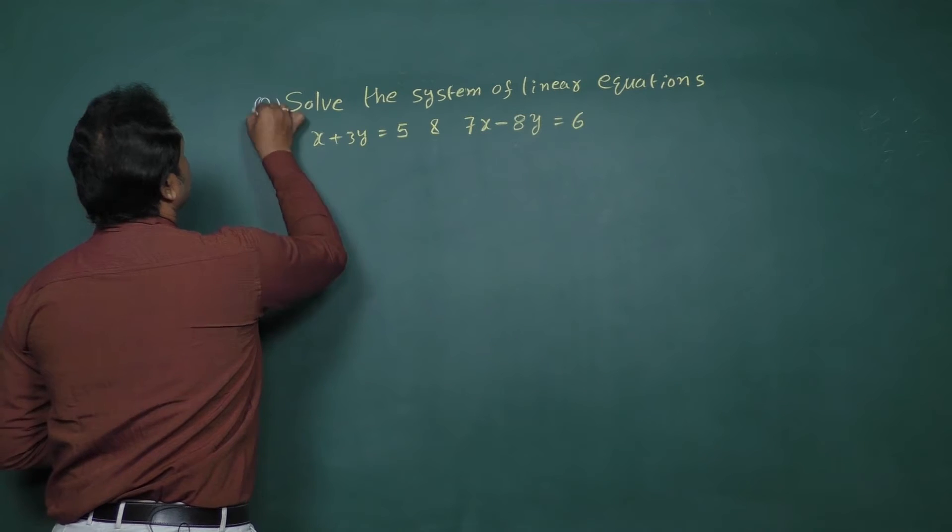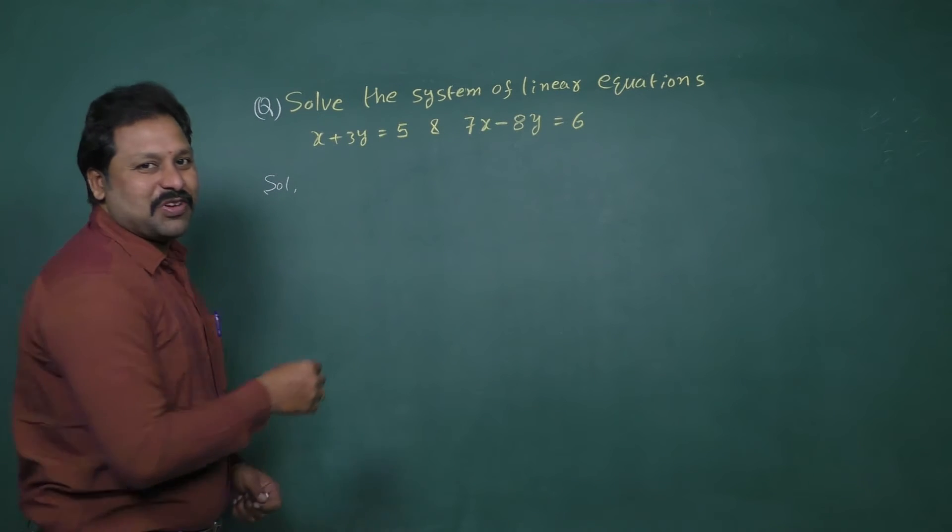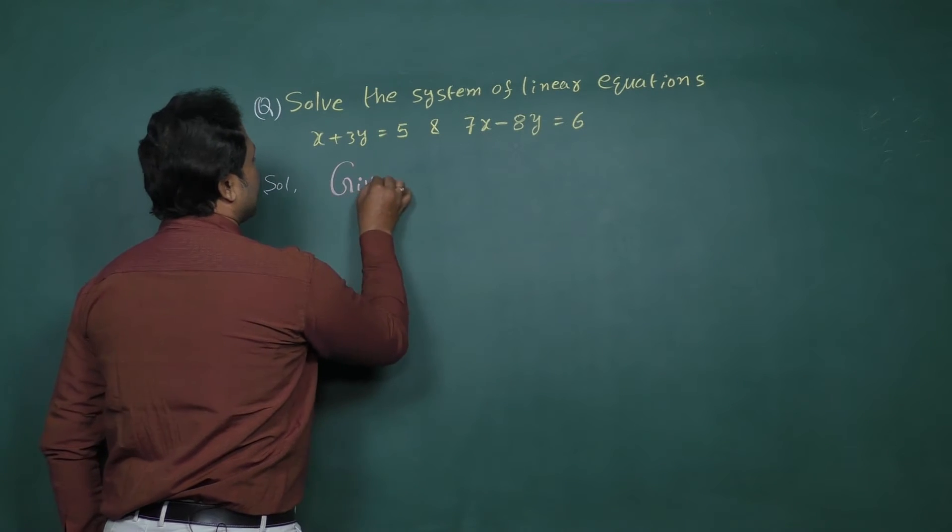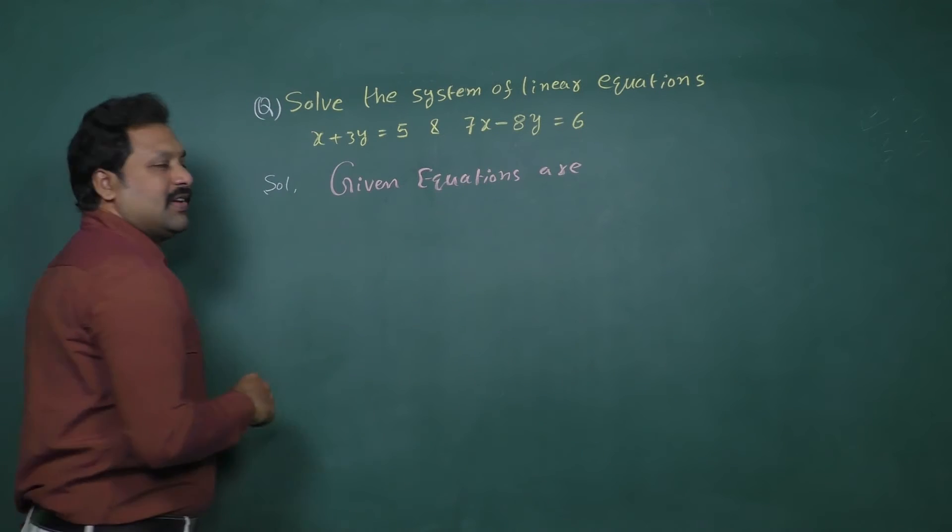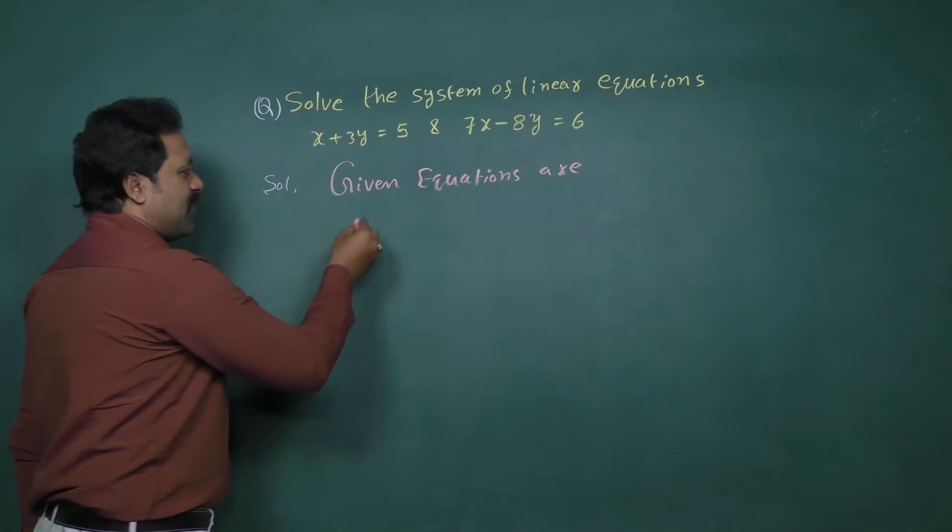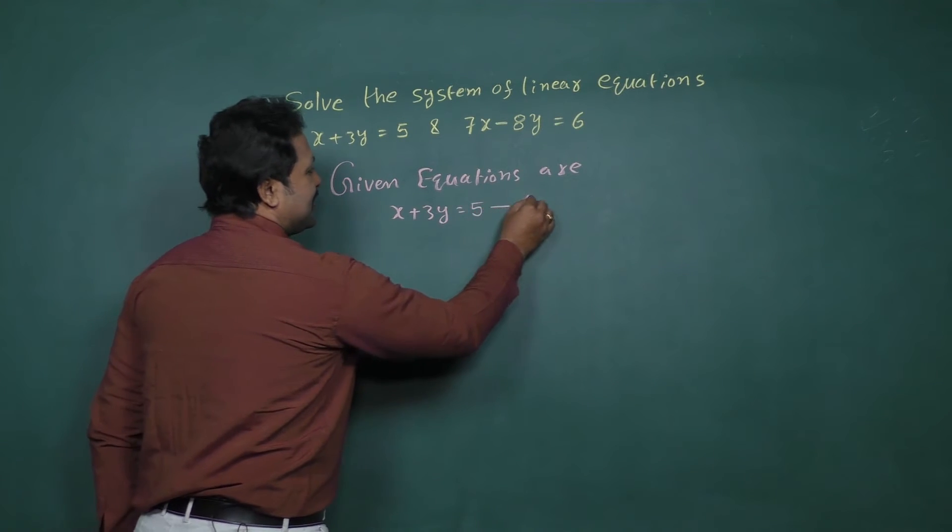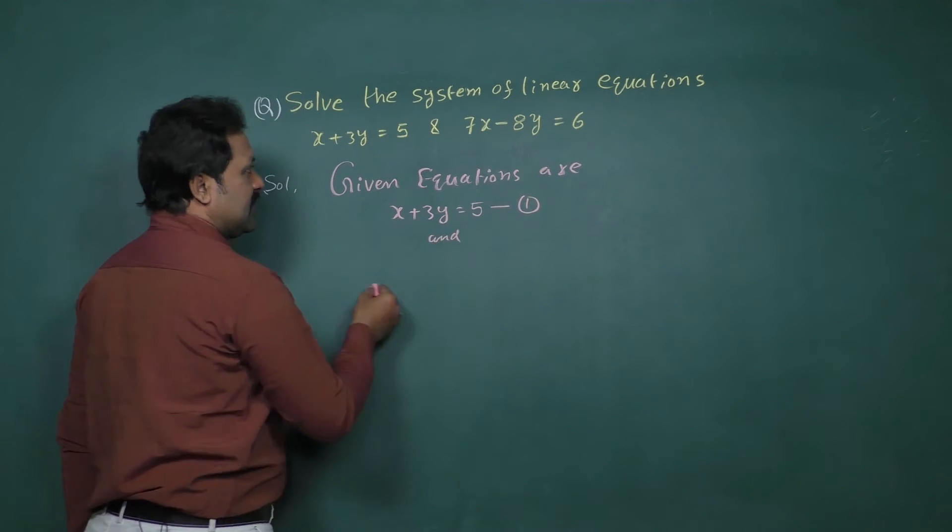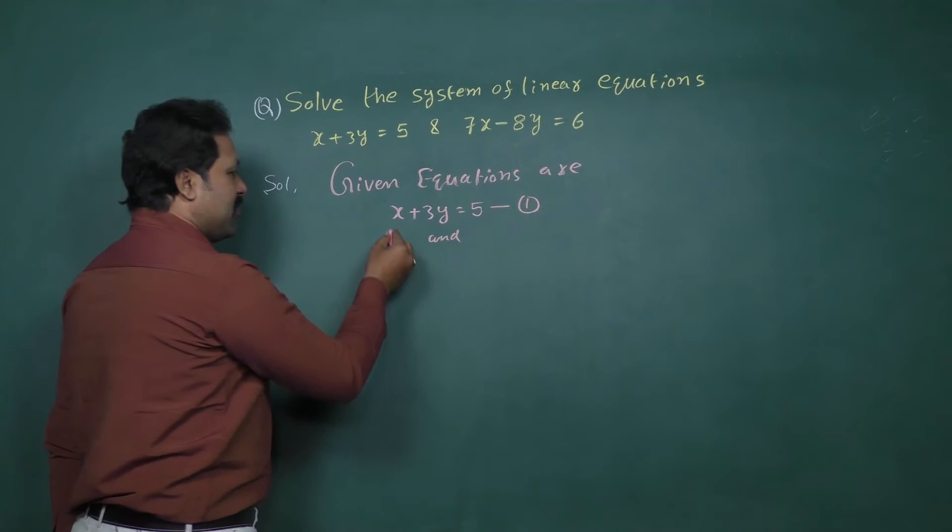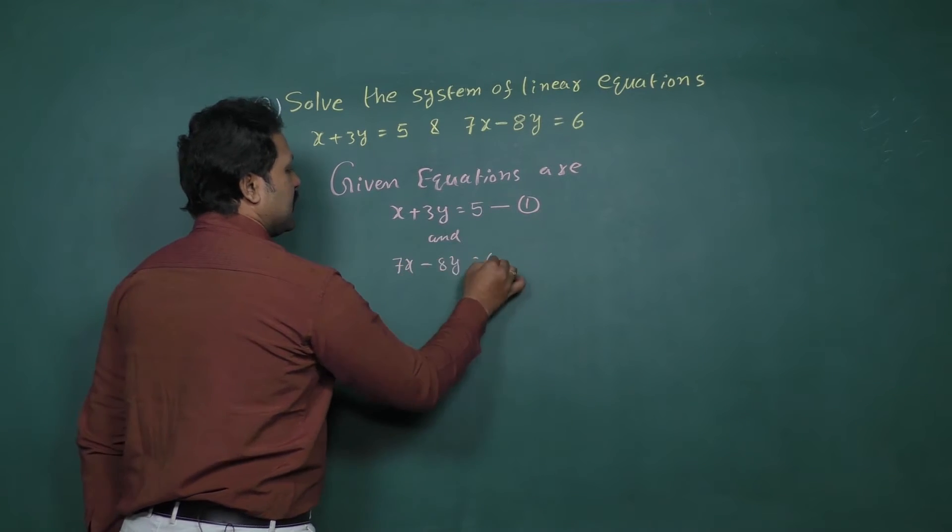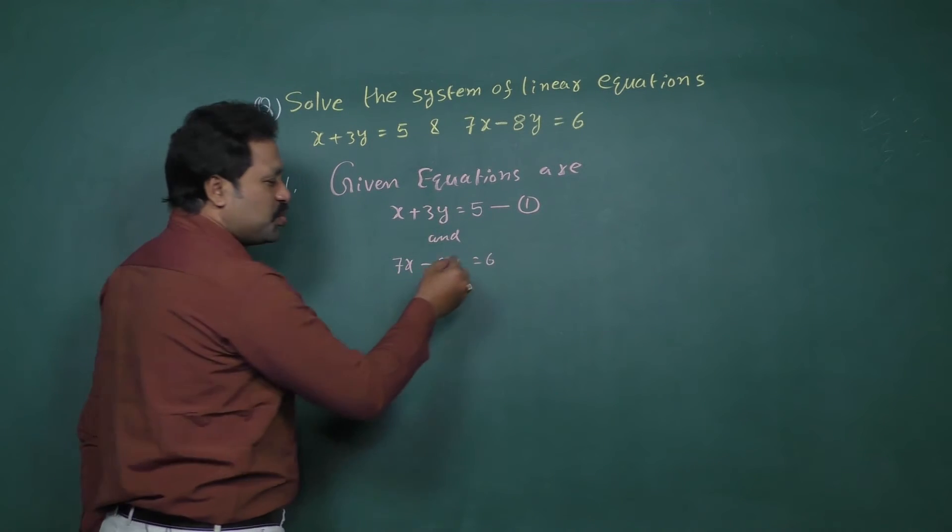Solution: Given equations are x plus 3y equal to 5, let it be equation 1, and 7x minus 8y equal to 6, let it be equation 2.